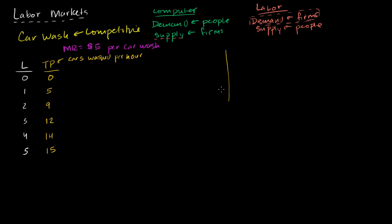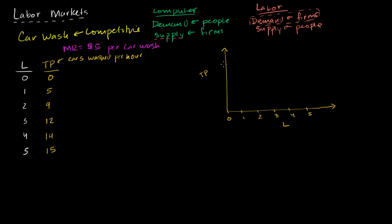So on the vertical axis we have total product, and on the horizontal axis we have quantity of labor. The quantity of labor goes from zero to five people, and the total product goes up to 15. Let's mark five, 10, and 15 on the vertical axis, and plot the corresponding points.